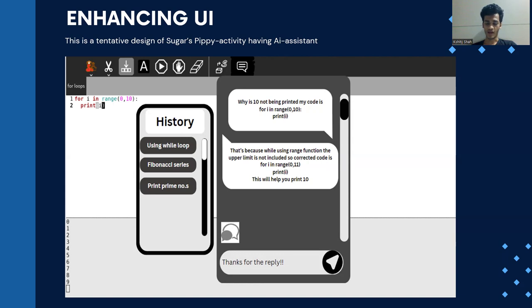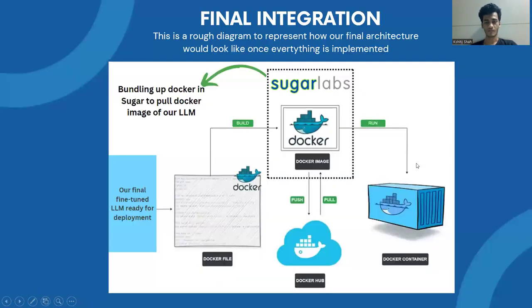Once our model has been deployed on Docker Hub, we would be enhancing the UI. This is a rough UI of how the Pippy activity would look like after the AI assistant has been added. This is a tentative design and is not final and can be changed if a need arises. This is the final integration of the AI assistant with the Pippy UI. This would be the rough architecture of how the Docker image of our large language model would be integrated with the UI of the Pippy activity.